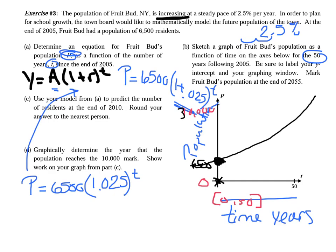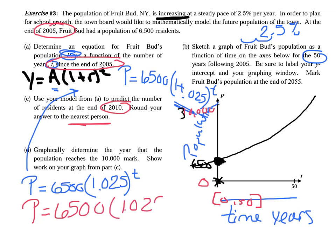Part c: Use the model from part a to predict the number of residents at the end of 2010, rounded to the nearest person. We started in 2005 and want 2010, so t equals 5 years since 2005. That gives 6,500 times 1.025 raised to the fifth power, which equals 7,354 people.